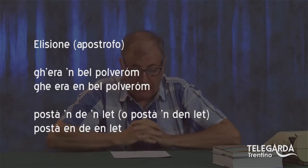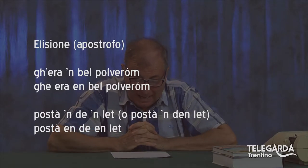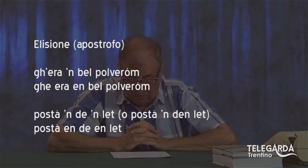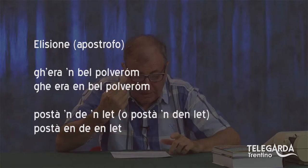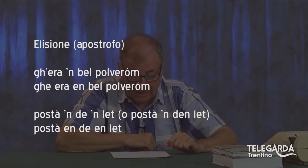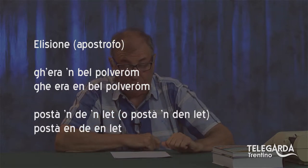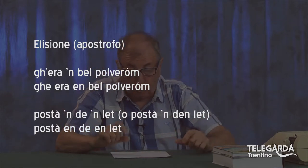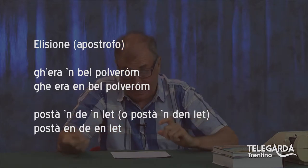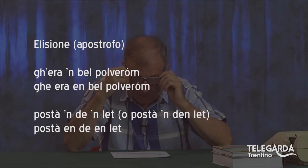Dopo l'accento tonico e l'accento fonico, arriviamo all'elisione, cioè all'apostrofo. G'éra en bel polveróm sta per ge era en bel polveróm: vedete la E di ge e la E di era — la prima cade e al suo posto va l'apostrofo, quindi diventa g'éra. G'éra en bel polveróm: scontro fra la A e la E, cade la E e al suo posto va l'apostrofo.